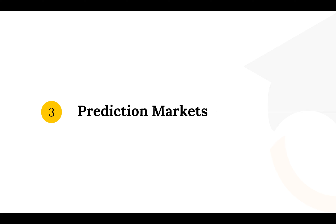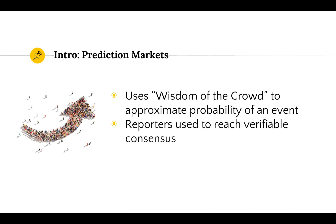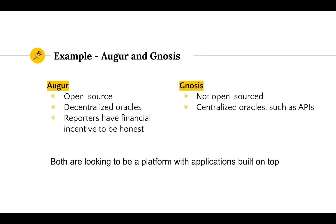Another way to achieve consensus is prediction markets, which is a slightly separate idea. Prediction markets use wisdom of the crowd to approximate the probability of an event — the more people that estimate the probability of an event, the higher the chance that the average of all of the votes accurately reflects the probability of the event happening. Prediction markets use reporters to reach verifiable consensus. The two primary prediction markets being developed today are Augur and Genesys.